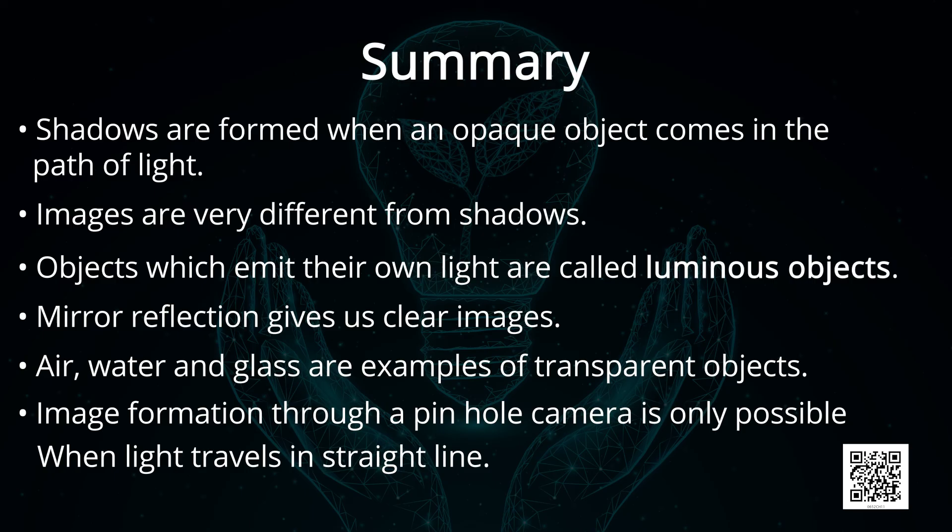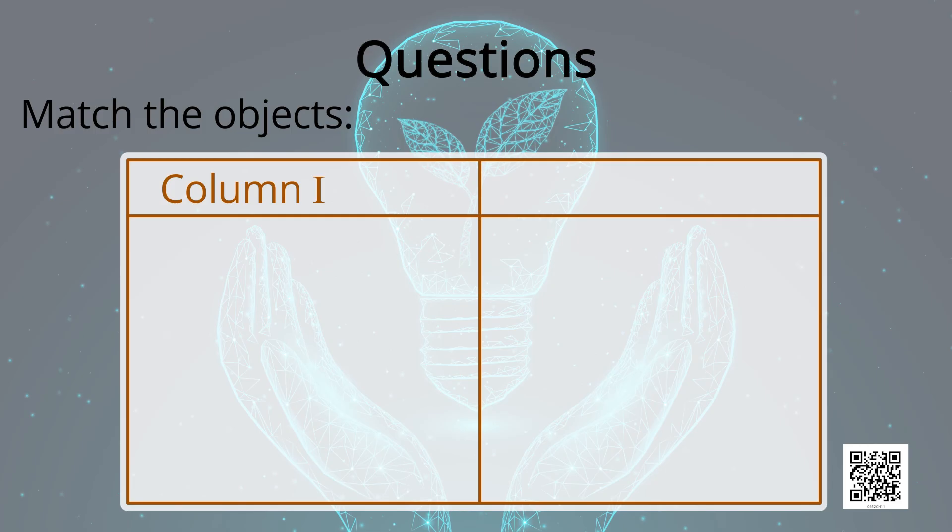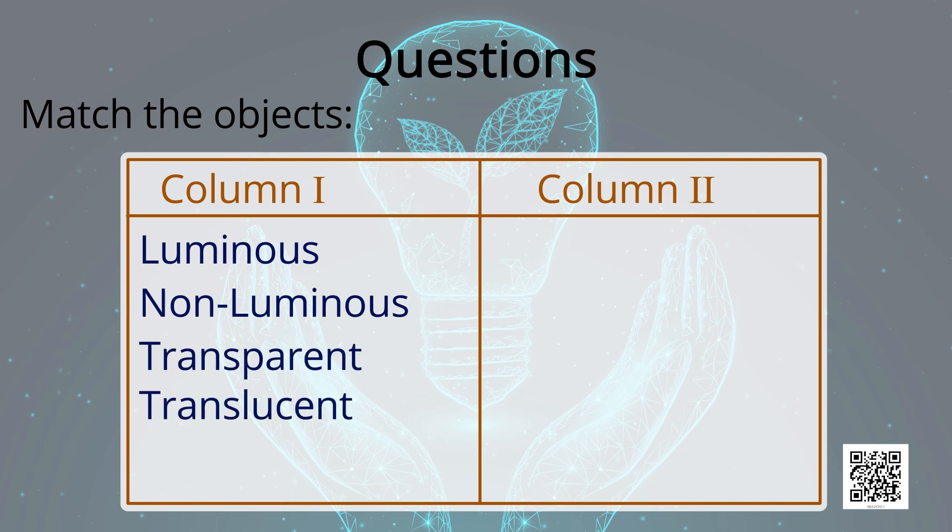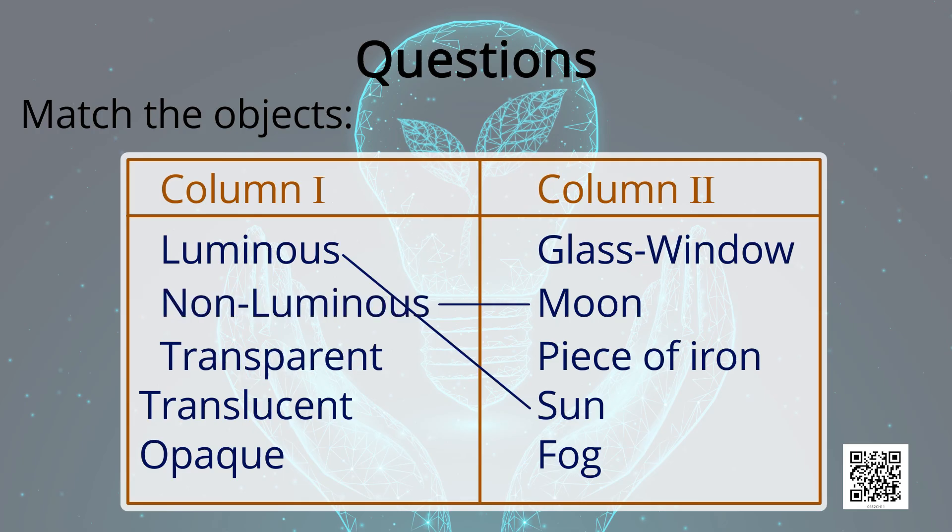Now I will ask a few questions and I hope that you might be knowing the answers. So my first question is match the objects in column 1 with suitable options in column 2. So the objects in the column 1 are Luminous, non-luminous, transparent, translucent, opaque. And the options in column 2 are Glass window, moon, piece of iron, sun, fog. So let us try to match column 1 and column 2. Luminous. So which of these is a luminous object? Sun. Non-luminous, moon. Transparent, glass window. Translucent, fog. Opaque, piece of iron.